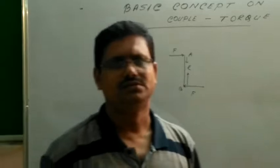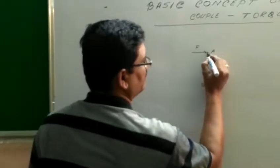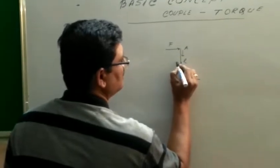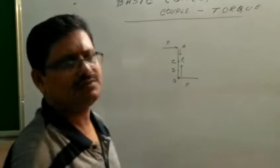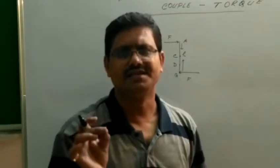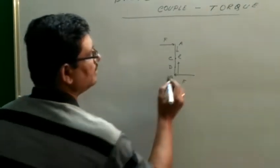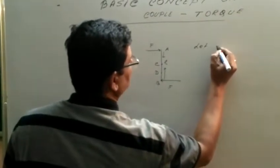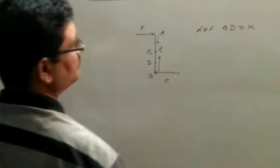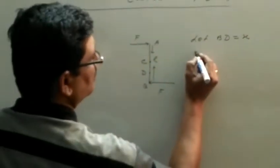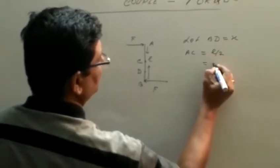Now we want to calculate the torque about point A, C, or D. Where C is the center of mass and D is any point of the rod. Let the distance from D to B equal to X. AC equals L by 2, that means BC also equals L by 2.